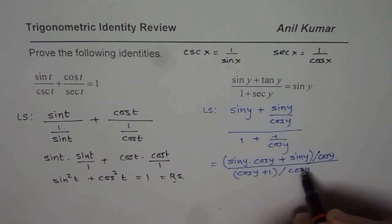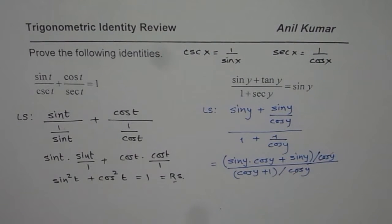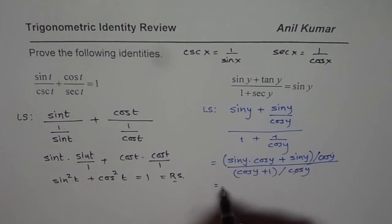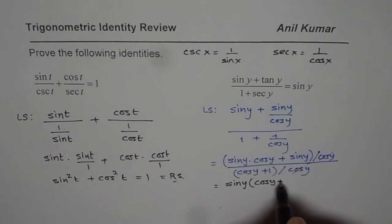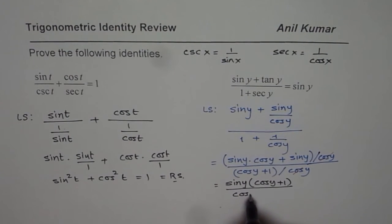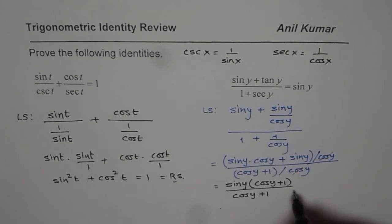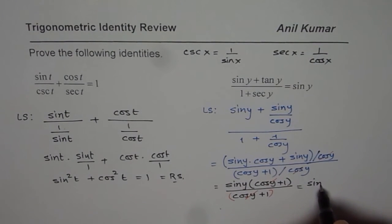Now cos y, cos y cancels out. In the numerator, I can take sine y common. So if I take sine y common, I get sine y common. I'm left with cos y plus 1. In denominator, I already have cos y plus 1. So these cos y plus 1 and cos y plus 1 cancel out. I'm left with sin y, which equals the right side.